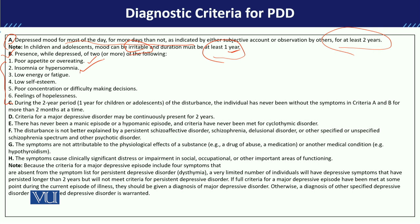The second symptom is insomnia or hypersomnia — the child is either not sleeping at all or sleeping excessively. If you see that the child has started oversleeping, you need to check whether they may be experiencing depression. The third symptom is low energy or fatigue — the child feels fatigued quickly because they are not enjoying anything and do not feel energetic. They may complain of being tired after school or refuse to play games saying they feel tired.